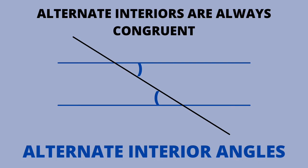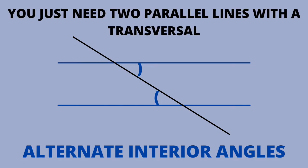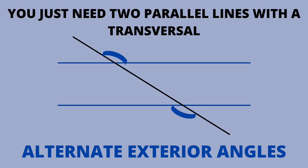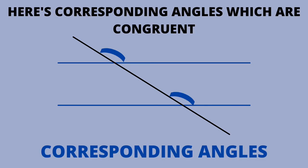Alternate interior angles are always congruent. You just need two parallel lines with a transversal. Next up are corresponding angles.